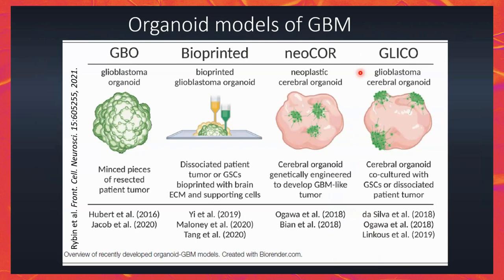What are these different cell models, especially the 3D organoids? You can have minced tumor tissue grown in culture, bioprinted organoids, cerebral organoids that are genetically engineered to grow GBM tumors just like what happens in patients, or organoids co-cultured with animal cells.